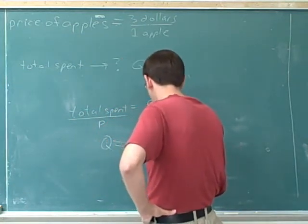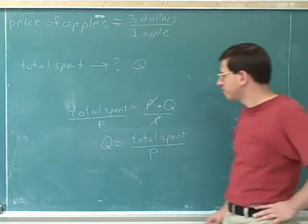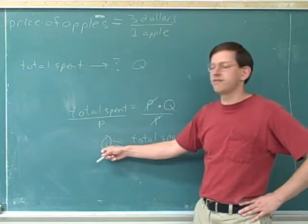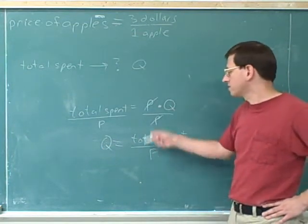And we end up with the quantity equals the total spent on apples divided by the price. So this is the official formula for figuring out the quantity of apples that you bought: the total spent divided by the price. You could have used this formula to solve all the problems that we just did.